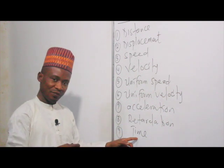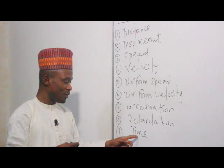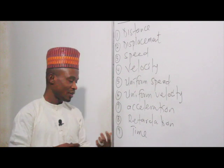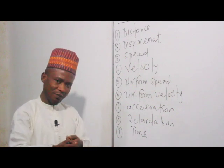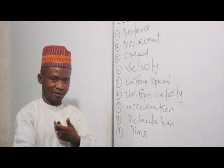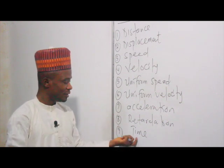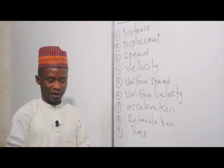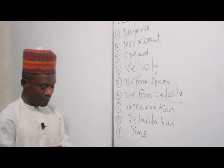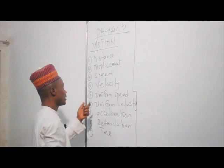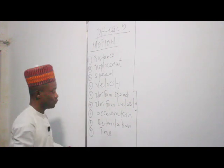Time is one of the major quantities in defining motion. Time is the interval between one event and another event. Time is a scalar quantity and the basic unit of time is seconds. These are the important parameters we need to know when defining motion.